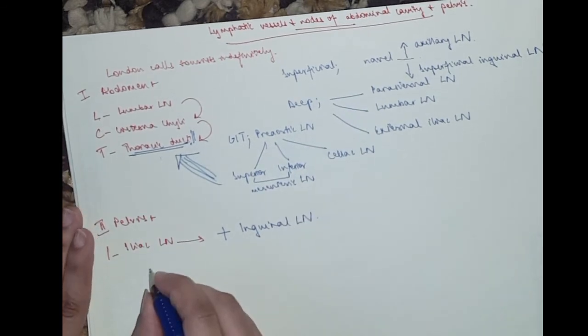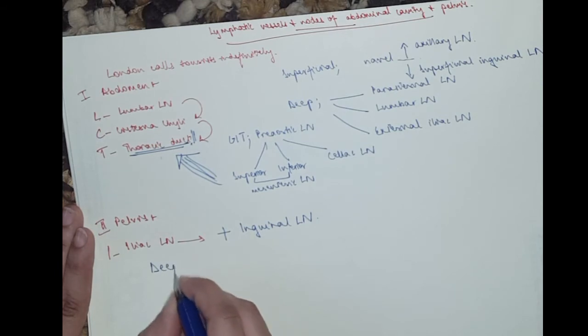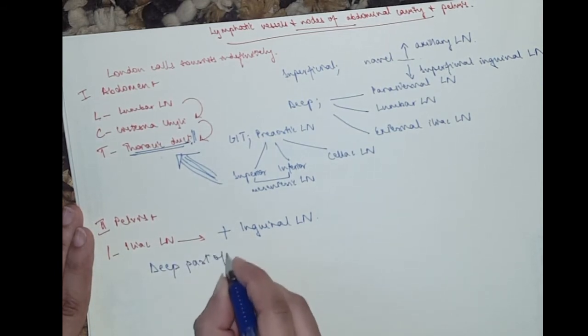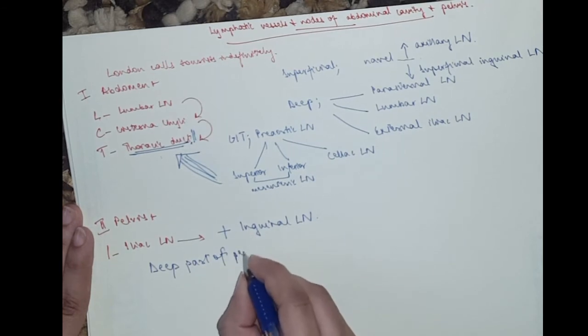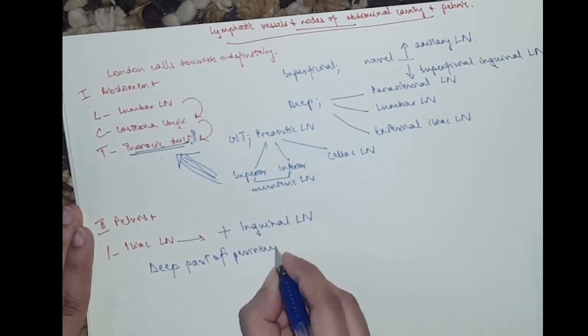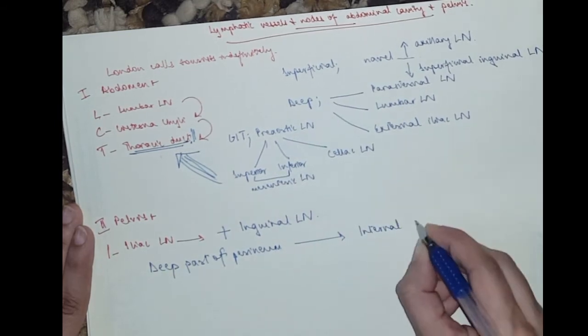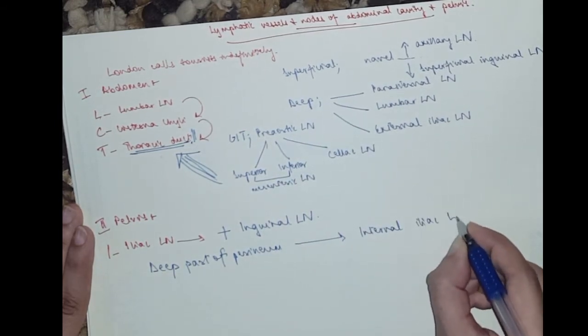So we've got superficial and deep. First, the deep part of the perineum, it drains into internal iliac lymph nodes.